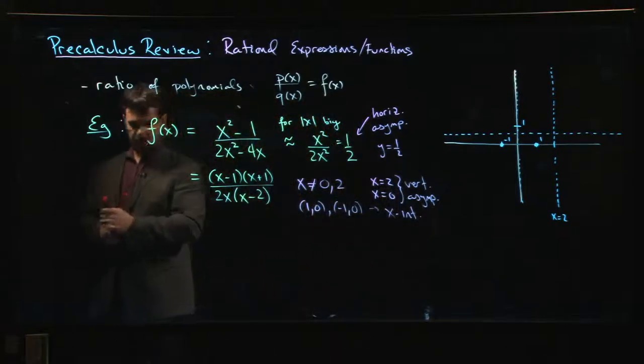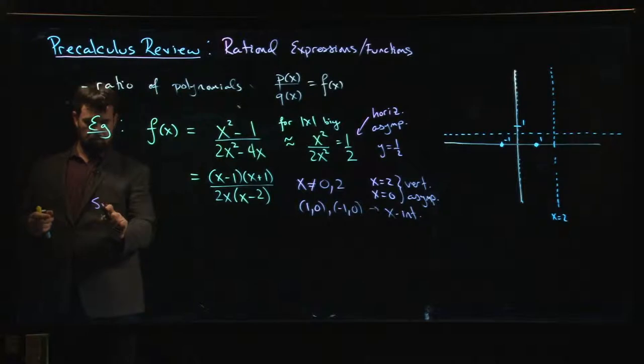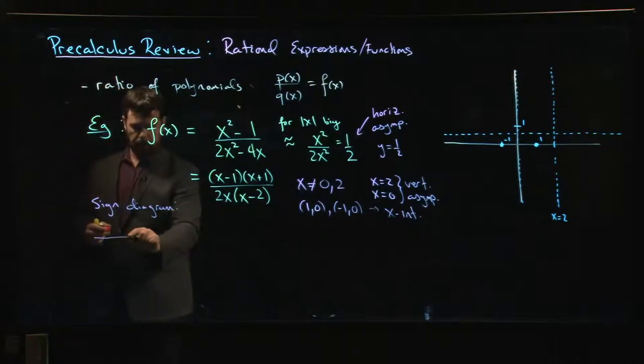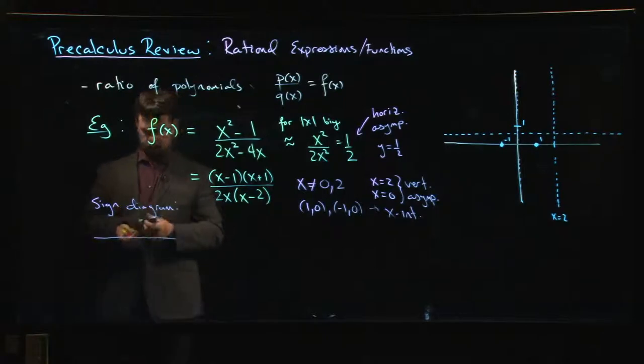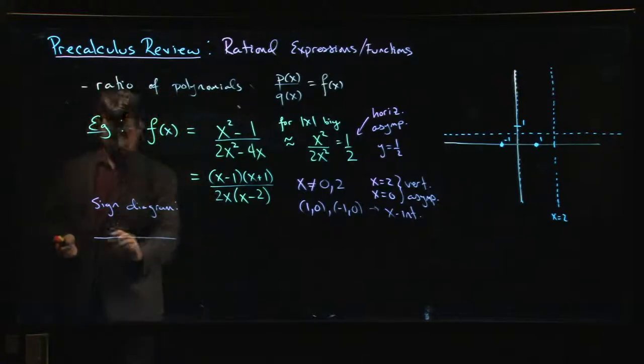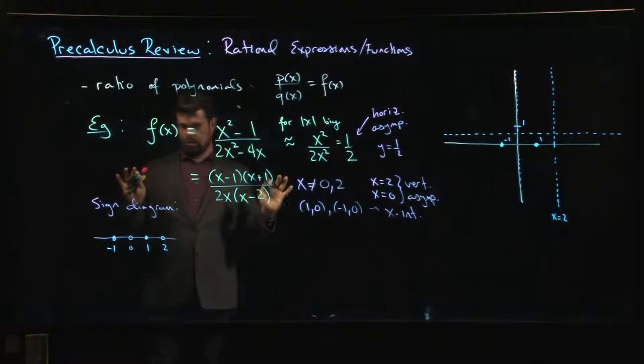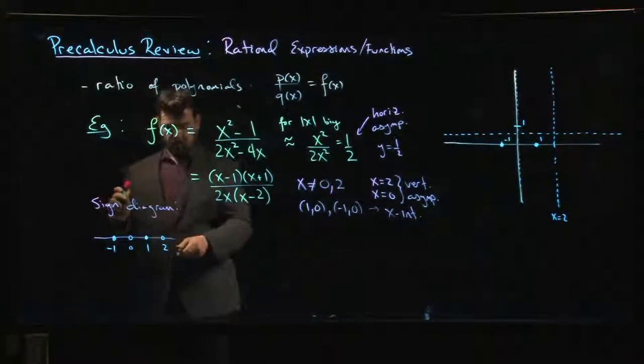The other thing I probably want to do is I probably want to look at the sign diagram. We'll draw our number line. We're going to mark off intercepts at minus 1 and at plus 1.